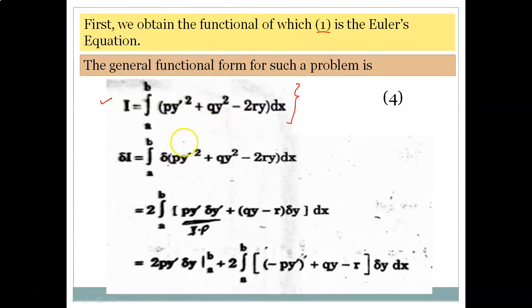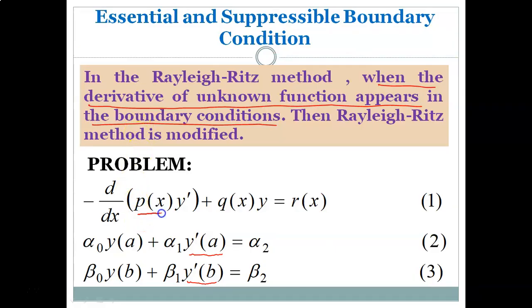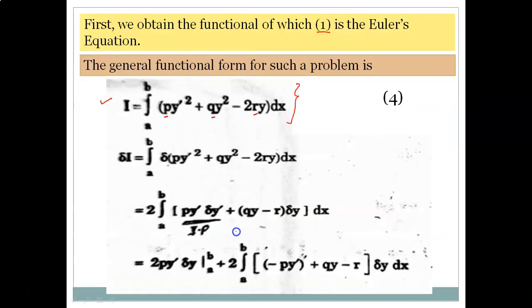Here p, q, and r are functions of x. p is this function, q is this function, and r is the function on the right-hand side. Whenever such a boundary value problem is given, you have to compare it with this standard equation and accordingly form the functional.